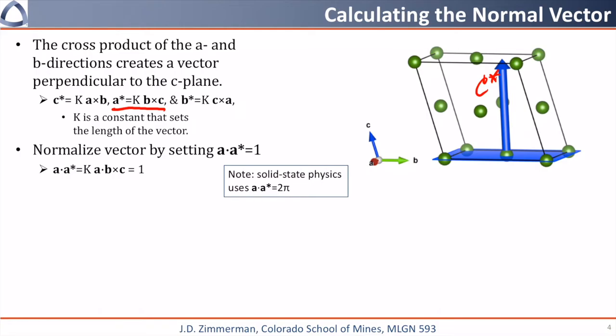If I take the dot product of a and a star using the middle relationship above, I will get k times a dot b cross c, which I have defined as being equal to one. Rearranging this, I get k is equal to one divided by a dot b cross c.